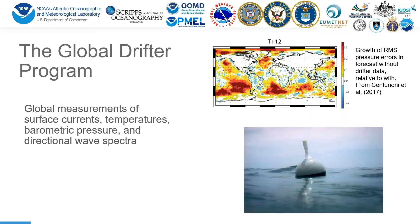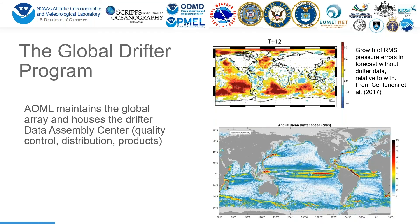The Global Drifter Program provides global measurements of surface currents, temperatures, barometric pressure, and directional wave spectra, and is per observation the leading way we reduce errors in weather forecasts. Here at AOML we lead the logistical effort to maintain a global five-degree by five-degree array with a large list of partners. We also house the data assembly center for the program, which does quality control, distribution, and creates products such as this climatology of ocean surface currents.